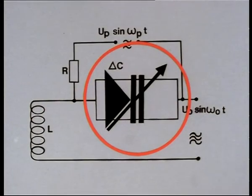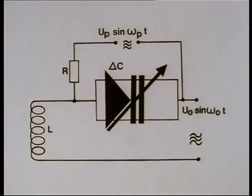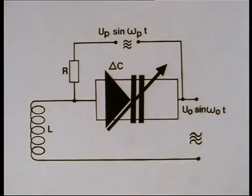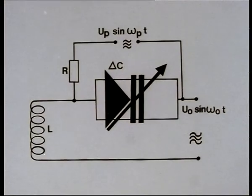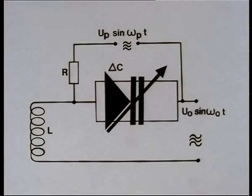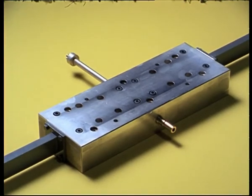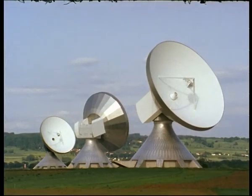In this circuit, this so-called varactor diode is the most important part of a parametric high-frequency amplifier to which a pump voltage, UP, is applied. The oscillatory circuit is a resonant waveguide into which the varactor diode is incorporated on the right-hand side.